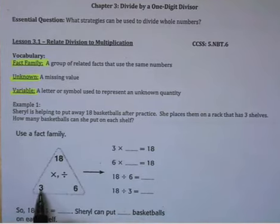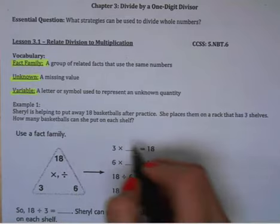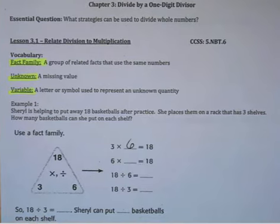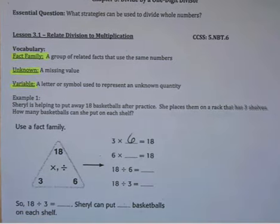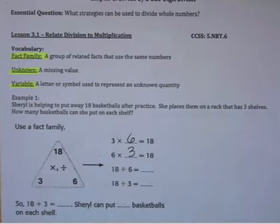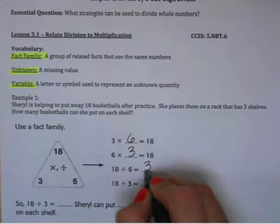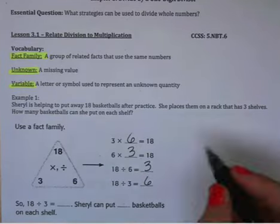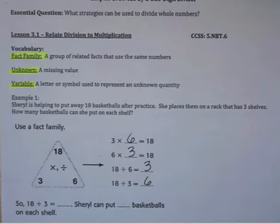If you know that 3 times 6 equals 18, that would be one number sentence in your fact family. You could also rearrange this by saying 6 times 3 equals 18, 18 divided by 6 equals 3, or 18 divided by 3 equals 6. So there are four number sentences in each fact family. Two multiplication and two division in this instance. You could also have a fact family that involved two addition problems and two subtraction problems.